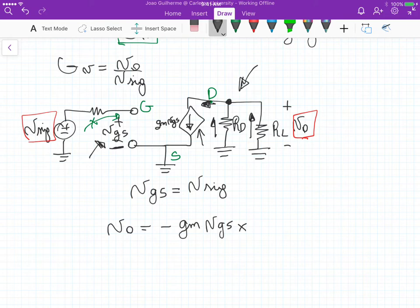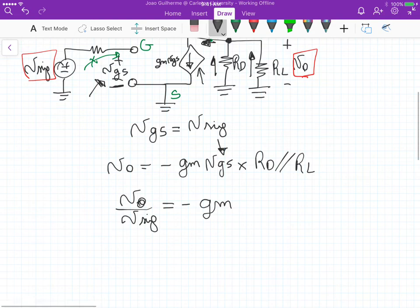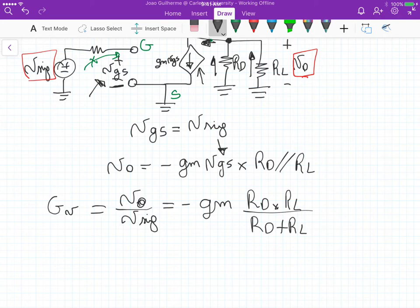So we have minus Gm VGS, which is the current, times the equivalent resistance, which is RD in parallel with our load. And because we know that VGS in this case is actually equals to the V signal, we can isolate Vout over V signal here, and that's equal to minus Gm, and if we expand this parallel here, it's RD times RL divided by RD plus RL, and this is actually the overall voltage gain.